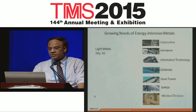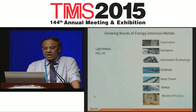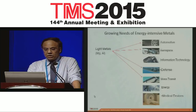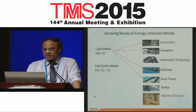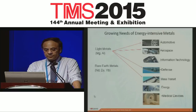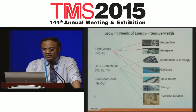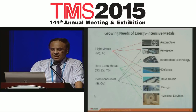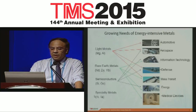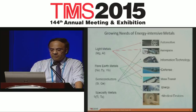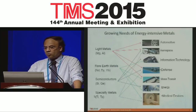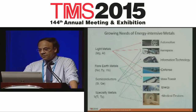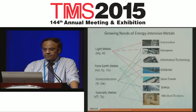Magnesium and aluminum are mainly used for structural and transportation applications. Then we have the rare earth metals — neodymium, dysprosium, etubium, and so on — used for magnets and lasers for a variety of applications. We have semiconductors that are mostly used for electronic applications. And then we have specialty metals like titanium and tantalum that are used for high strength and corrosion resistance. The applications go all the way from automotive, aerospace, information technology, defense, mass transit, energy, and medical devices.